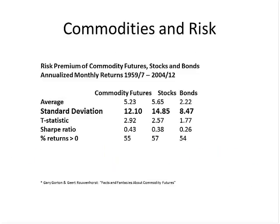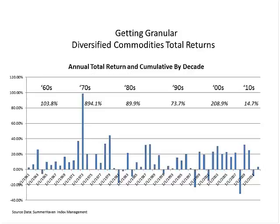Looking at the big spikes in the 1970s: interestingly, oil did not start trading as a commodity future until 1983. Those spikes were driven primarily by metals and eggs, not energy — until 1978 there wasn't a single energy commodity future, with the first being heating oil, not crude. What drove those spikes was high inflation broadly. High inflation clearly correlates strongly with strong returns from commodities.